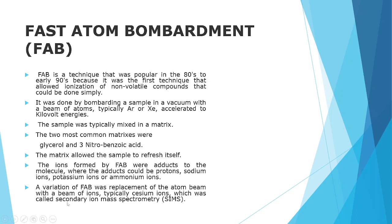A variation of FAB was replacement of atom beams with beam of ions, typically cesium ions, which was called secondary ion mass spectrometry (SIMS). SIMS spectra were typically identical to FAB spectra and the terms became interchangeable.